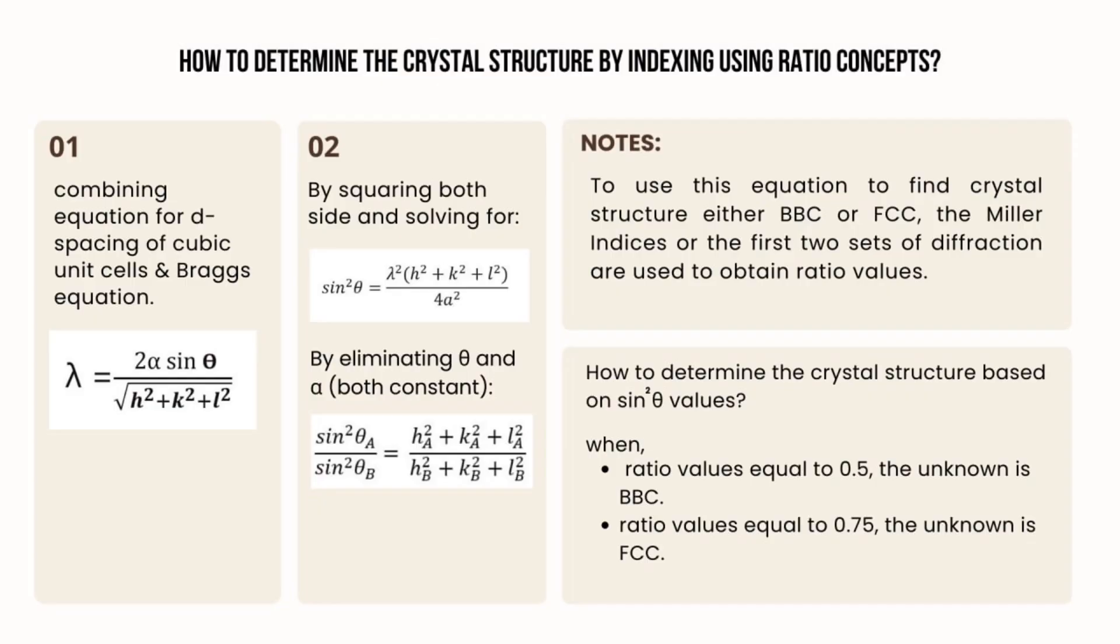How to determine the crystal structure by indexing using ratio concepts? First, by combining the D-spacing equation and Bragg's equation, we get lambda equals 2a sin theta over square root of h squared plus k squared plus l squared.